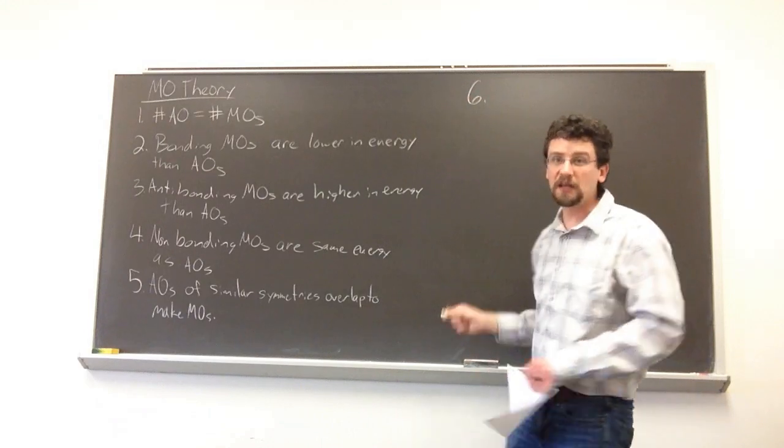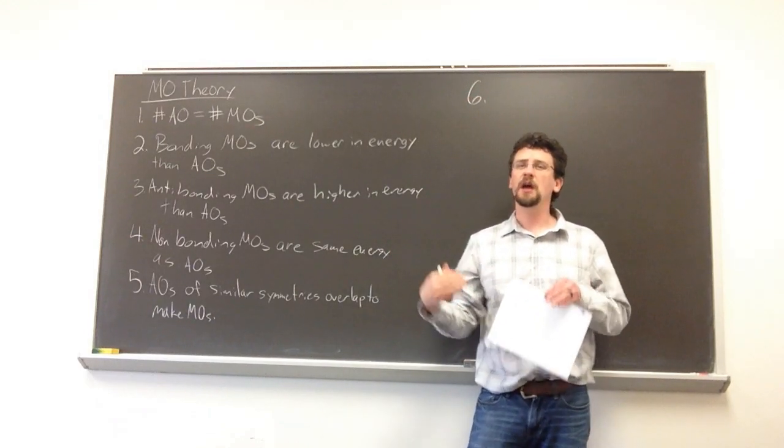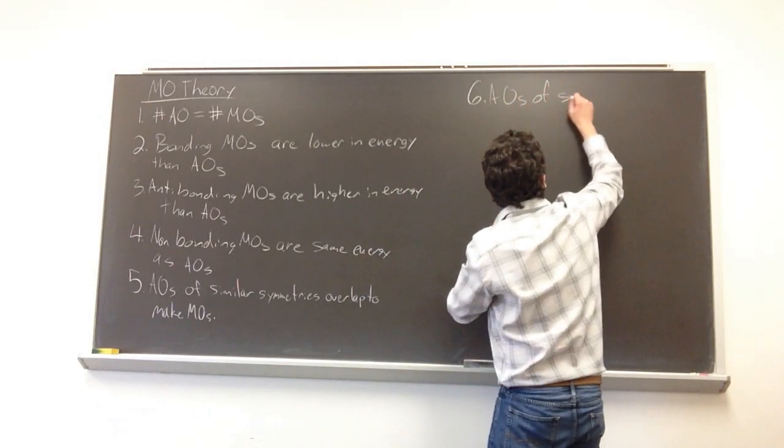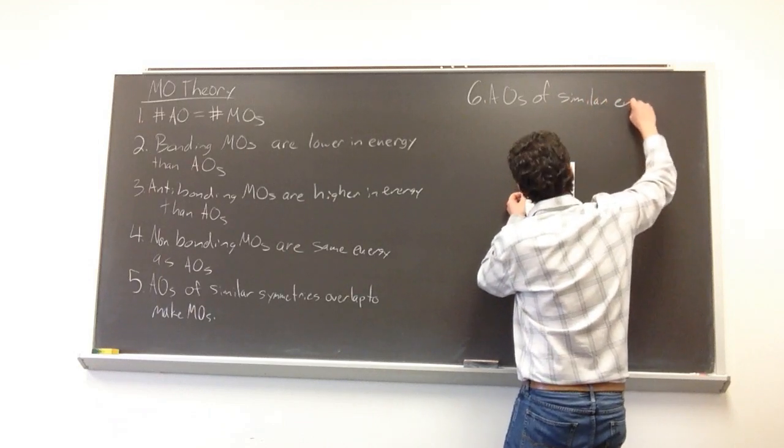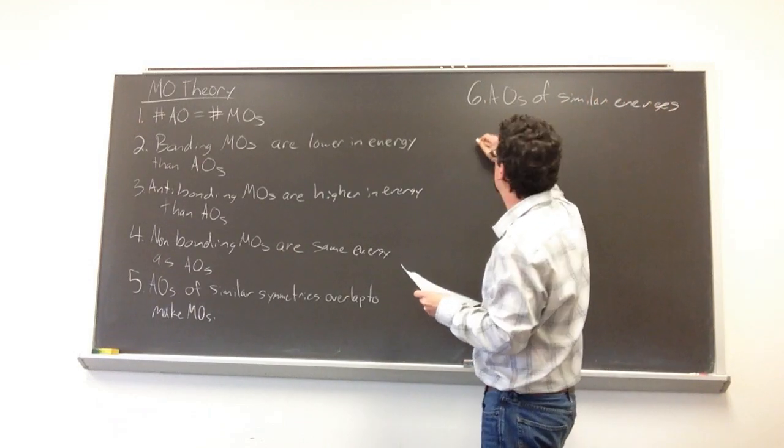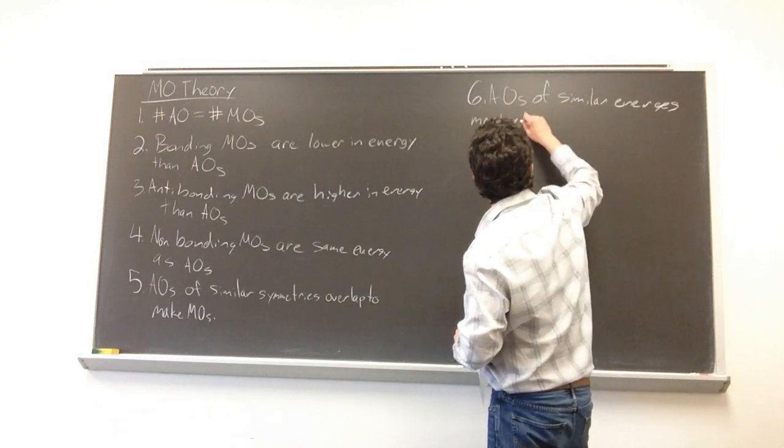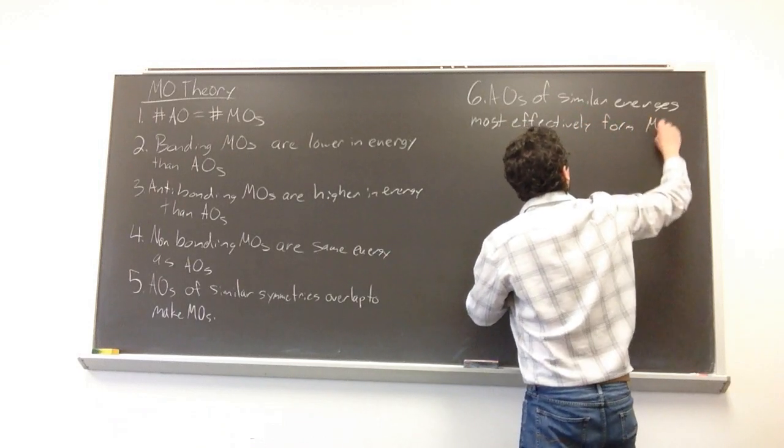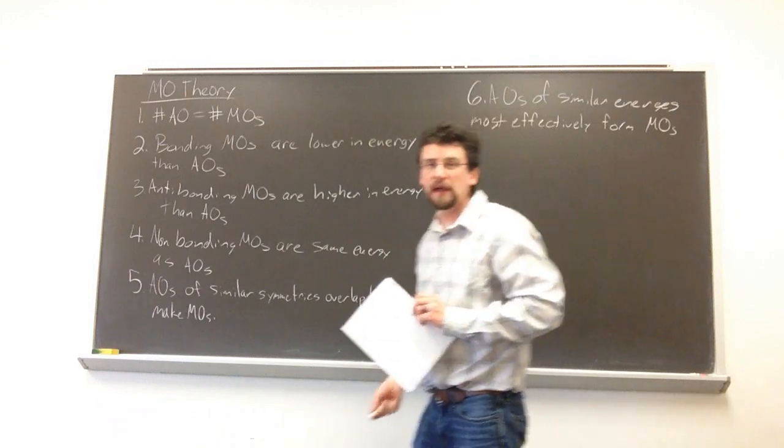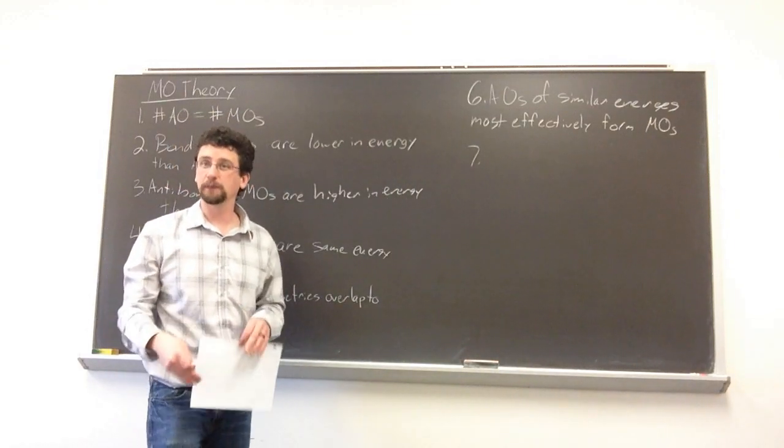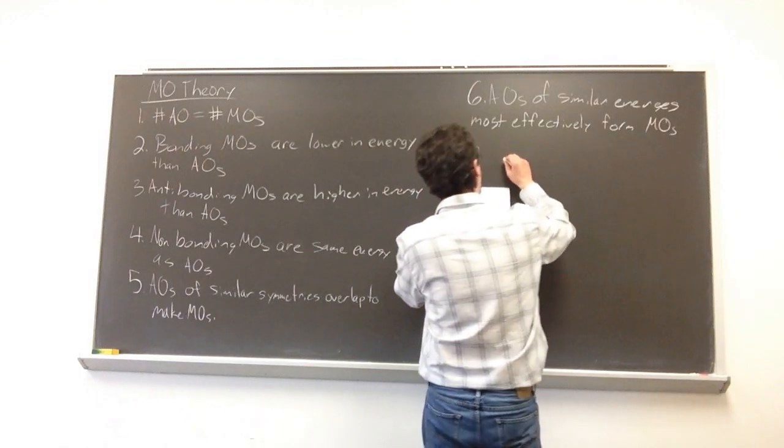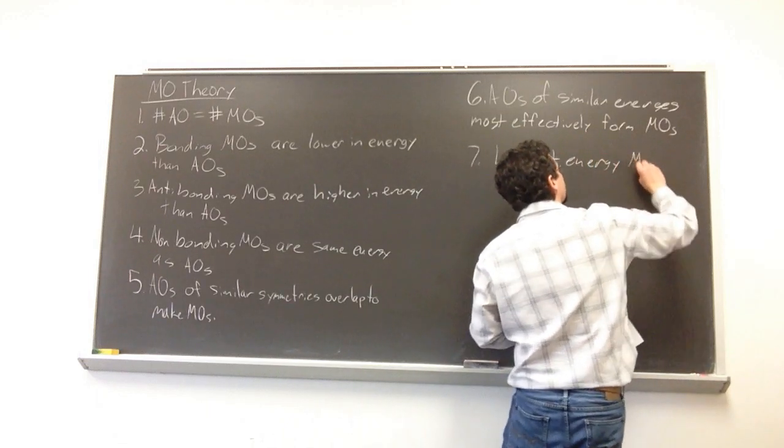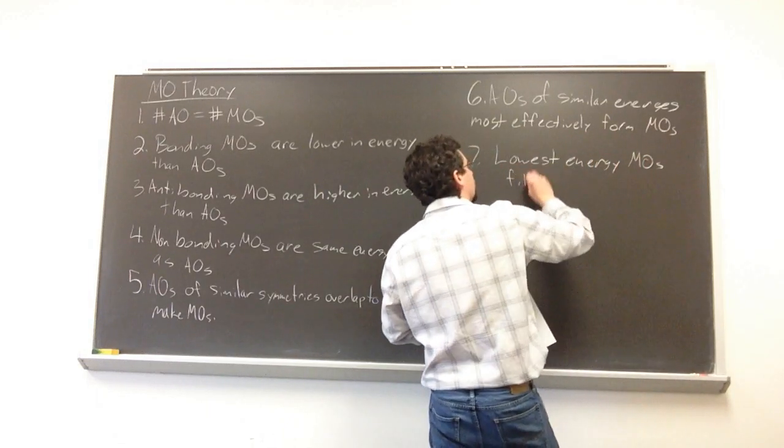Six, atomic orbitals that are close to one another in energy most effectively overlap. AOs of similar energies most effectively form molecular orbitals. In the last rule, the lowest energy MO fills before a higher energy MO. So lowest energy fills first.